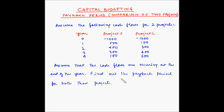Let's look at another video of capital budgeting where we will solve an example for payback period for two different projects. Assume the following cash flows for two projects. Initially the outlay is 1000 rupees. At the end of the first year, project S generates an inflow of 500 rupees whereas project L generates an inflow of 100 rupees. At the end of the second year, project S generates 400 rupees while project L generates 300 rupees, and so on. Assume that the cash flows are occurring at the end of the year.